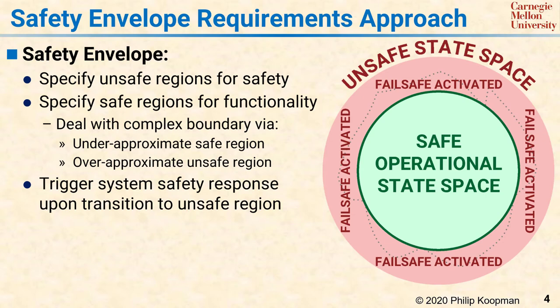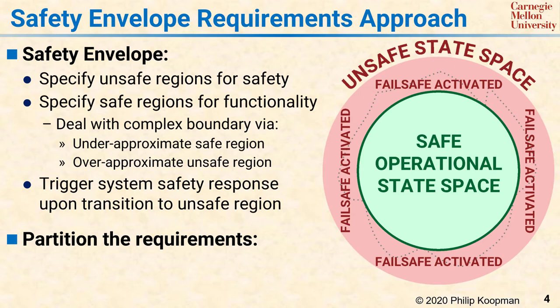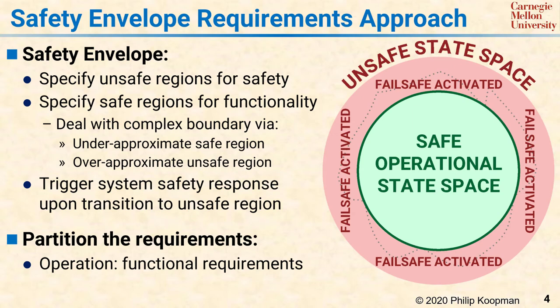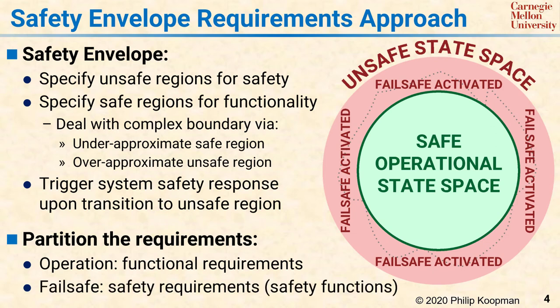Once you take this view of the system, you can then partition the requirements. The operational requirements talk about what happens in the safe portion of the region — the green region. In general, optimization of behavior is all about what happens in the green region, and those requirements tend to be more complex. Safety usually doesn't have much to do with what happens in the green region. Rather, safety cares about not doing something unsafe — in other words, keeping out of the red region. That means you can have a completely separate set of requirements that are all about detecting being in the red region and doing some safing action to keep the system safe. Those requirements generally correspond to the notion of a safety function as defined by functional safety standards.